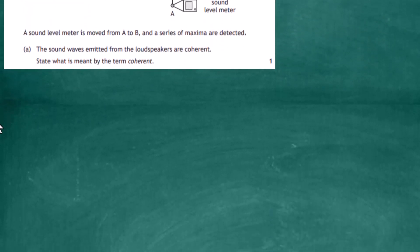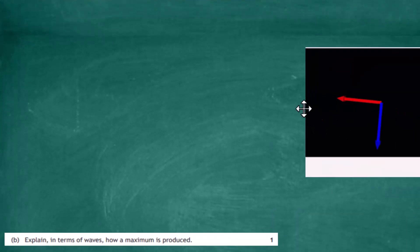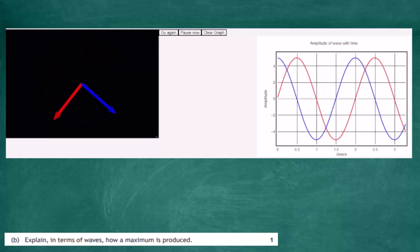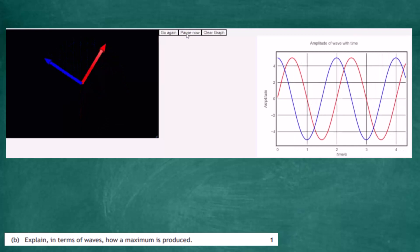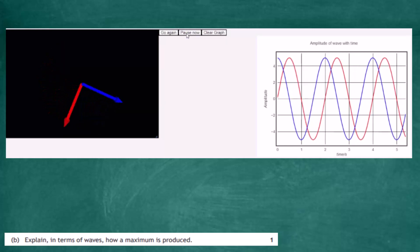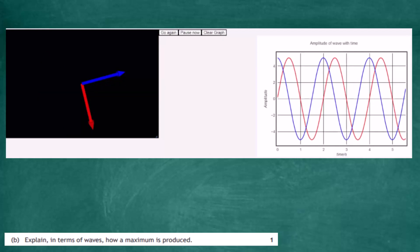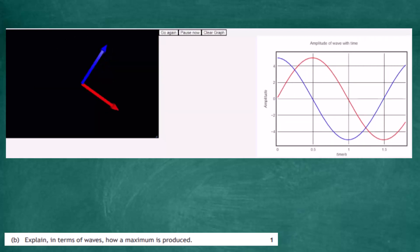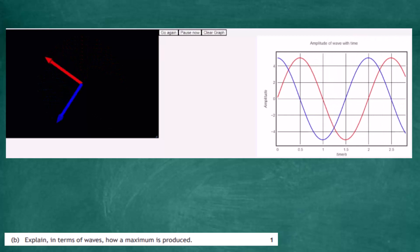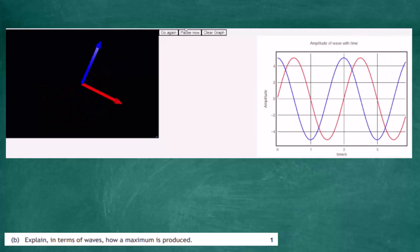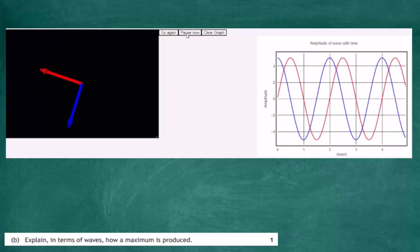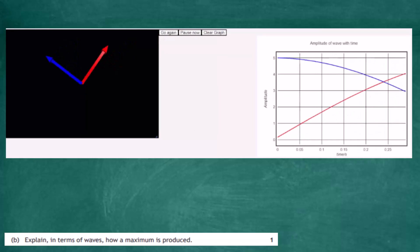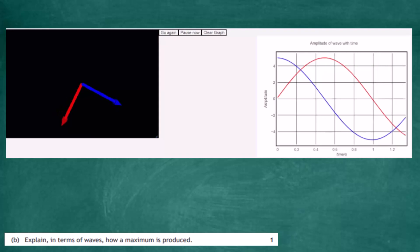I'll show what is meant by a constant phase relationship using a diagram from a computer program. Here we have two rotating arrows — imagine them as hands on a clock rotating anti-clockwise. Notice that the angle between the two arrows is exactly the same at every point in their cycle. This constant angle is what we mean by a constant phase difference, which we can chart as the y-amplitude of both the blue and red arrows.